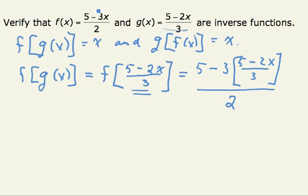So what I've done in the second step is I've looked at this expression and replaced x by 5 minus 2x divided by 3. Now I'm just going to simplify this algebraically. Well, the first step is to cancel the 3's.